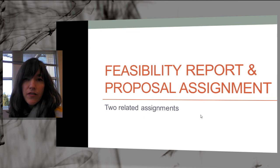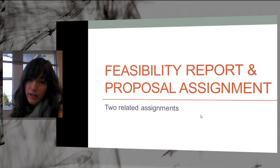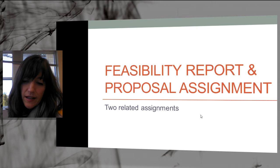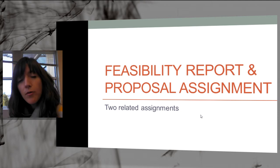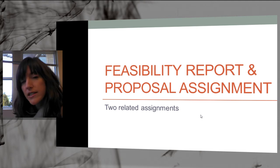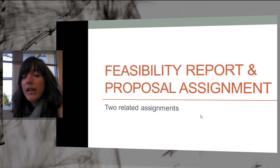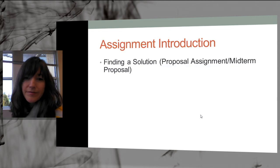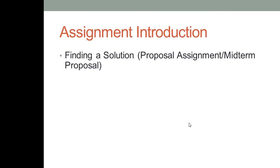First, you'll be doing a feasibility report and then you will be doing a proposal assignment. I just want to talk about the scope of these two reports and what each assignment entails. Basically, you're finding a solution to a problem or an issue at hand, and then you are putting together a plan to implement this solution — and that is your proposal assignment.